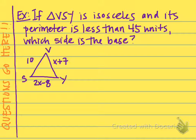Let's try an example using these ideas of the different kinds of triangles. It says: if triangle VSY is isosceles — meaning at least two of its sides are congruent — and its perimeter is less than 45 units, which side is the base? Remember, the base is the side that is not congruent to the other two. We don't know which two sides are congruent, but we do know the perimeter is less than 45, so let's set up an inequality to represent that.